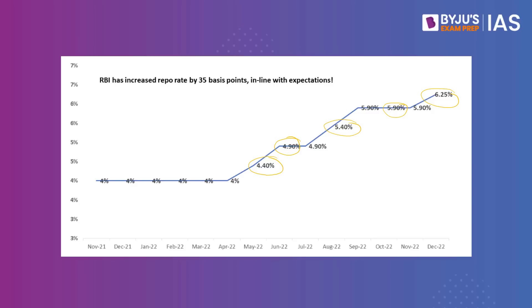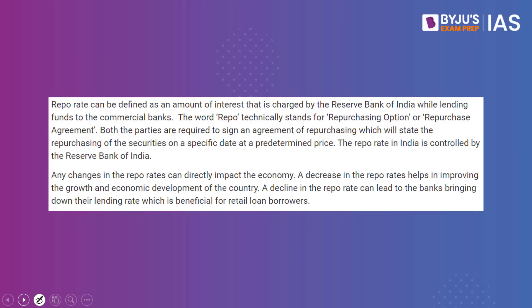When we speak about retail inflation, it is the inflation that everyday consumers face — the rise in the general price level. When inflation runs high, the RBI increases the repo rate. The repo rate can be defined as the rate of interest charged by the Reserve Bank of India while lending funds to commercial banks. The word 'repo' technically stands for repurchasing option or repurchasing agreement. Both parties sign a repurchase agreement stating the repurchasing of securities on a specific date at a predetermined price. One basis point is one-hundredth of a percentage point.